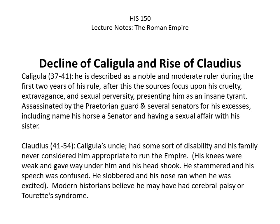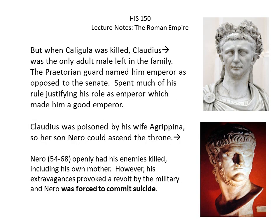After Caligula was killed, the Praetorian Guard had no one left in the family to put on the throne other than Claudius, Caligula's uncle. Claudius didn't come across as an emperor — he had some sort of disability: he walked with a limp, his knees were weak, his head shook, he stammered, his speech was confused, and he drooled. But modern historians think he may have had cerebral palsy and Tourette's syndrome, which didn't affect his mind. Claudius spent most of his rule justifying himself as a good emperor — and he was.